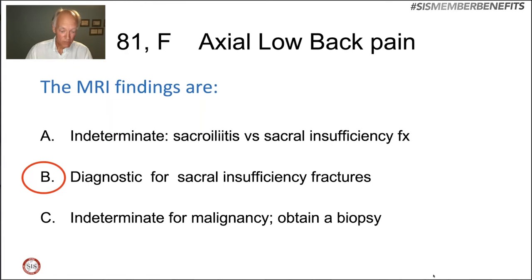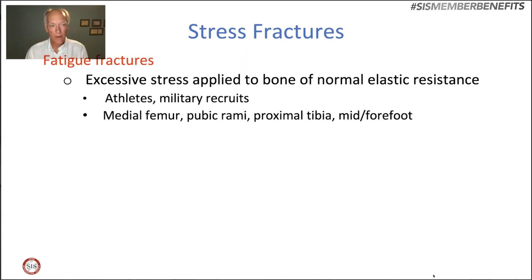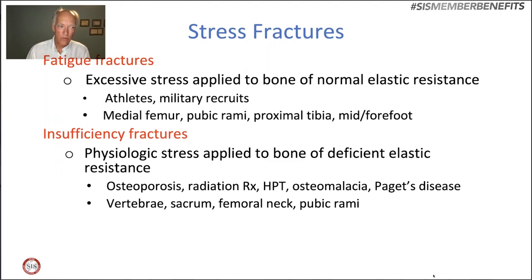Let's talk about stress fractures in general. We divide them into two basic segments. Fatigue fractures occur where excess stress is applied to bone of normal elastic resistance — seen in elite athletes and military recruits, in characteristic locations such as the medial femur, pubic rami, proximal tibia, and mid and forefoot. What we're dealing with here are insufficiency fractures, where a normal physiologic stress is applied to a bone with deficient elastic resistance.